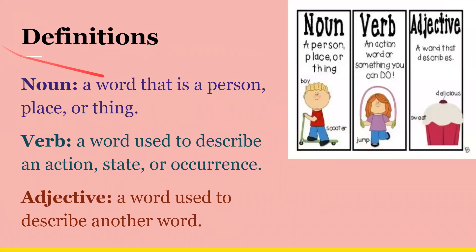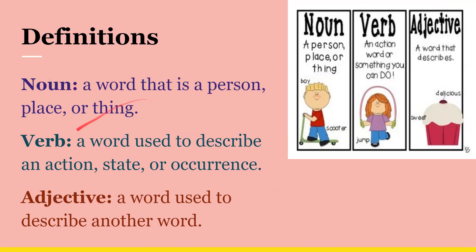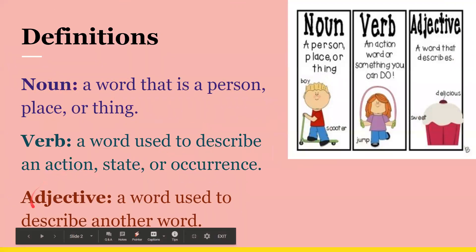So here are our definitions. A noun is a word that is a person, place, or thing. And a verb is a word used to describe an action, state, or occurrence. And an adjective is a word used to describe another word. So here are some examples here.